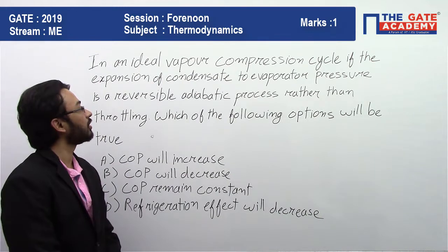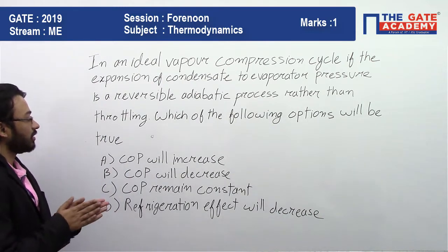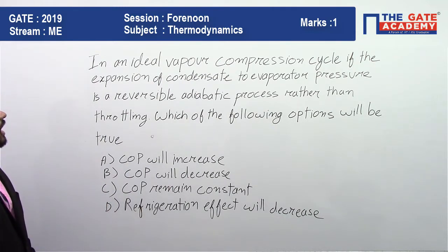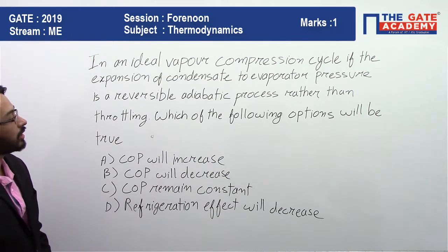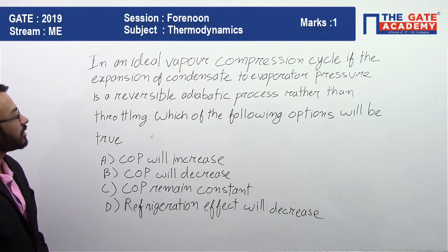The question is in front of you. Let us read the question. In an ideal vapor compression cycle, if the expansion of condensate to evaporator pressure is a reversible adiabatic process rather than throttling.